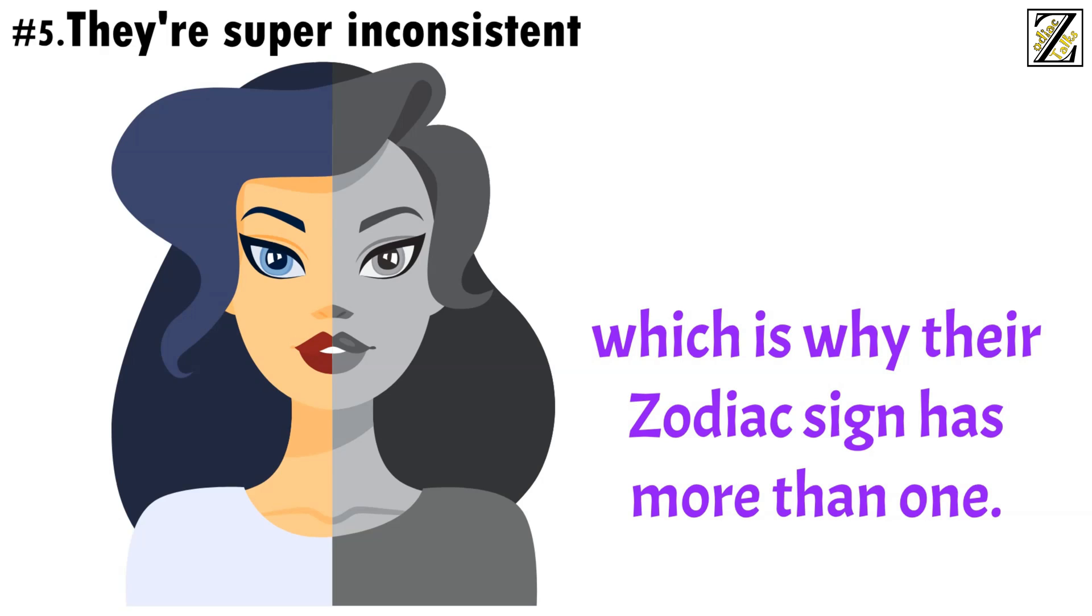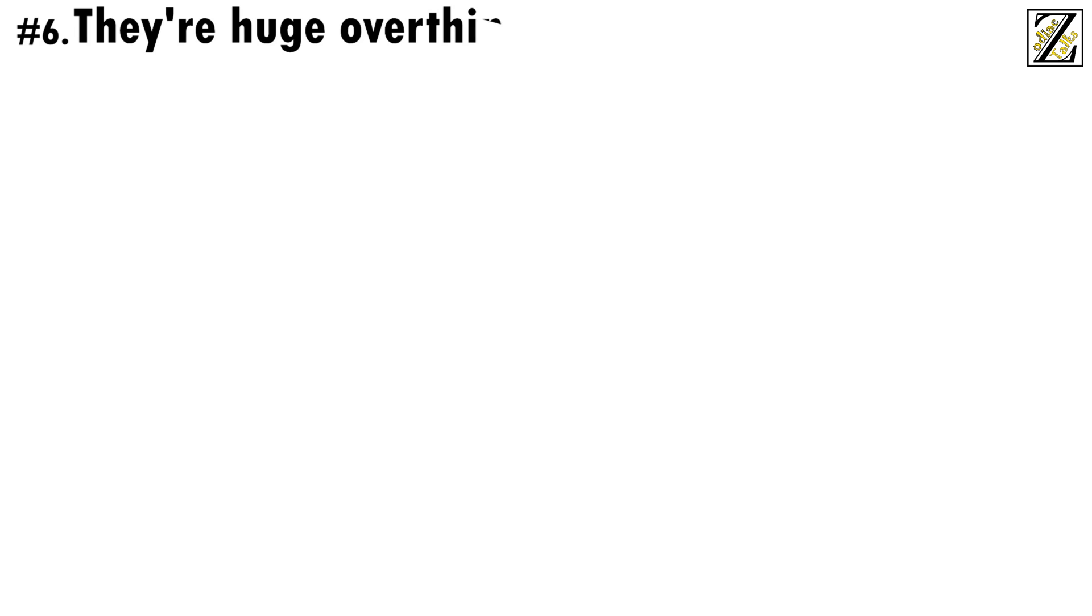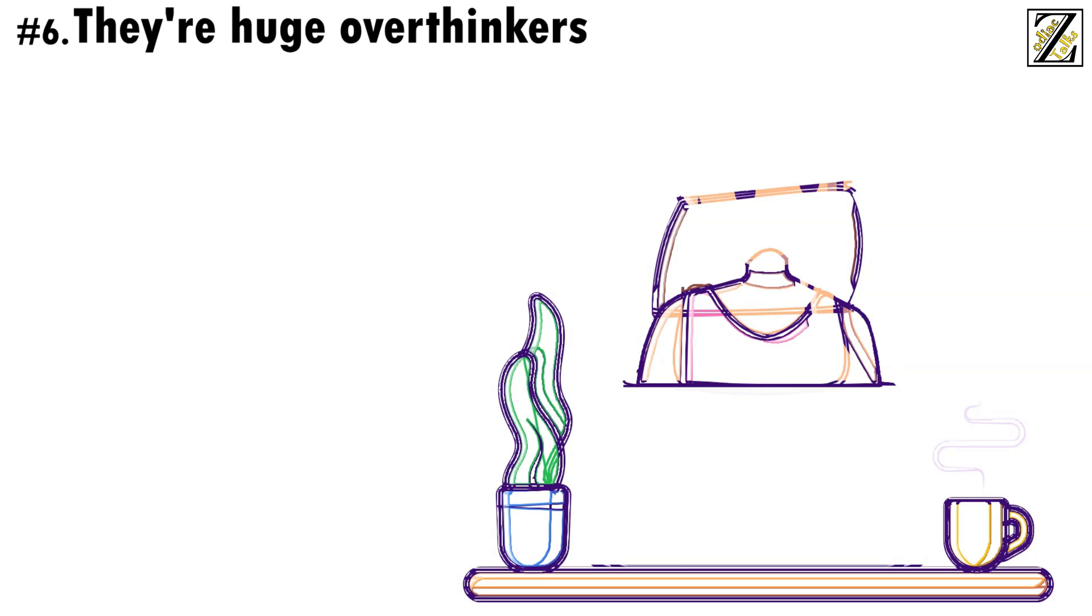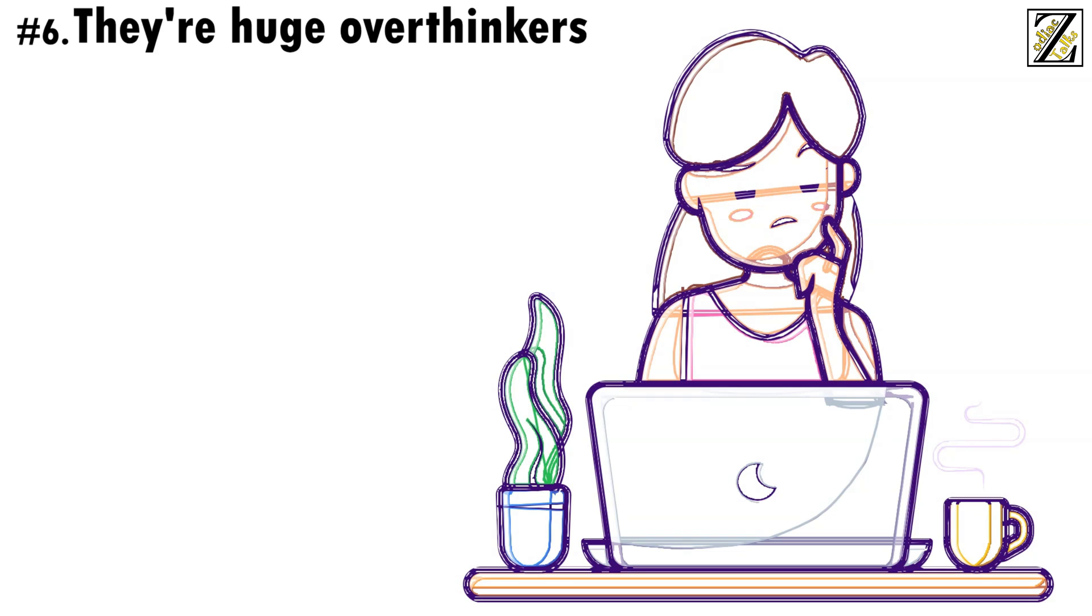Number 6, They're huge over thinkers. Part of the reason why Gemini is always changing their mind is that they always overthink everything, second guessing their every choice and flip-flopping between alternatives until someone else makes a choice for them, or they run out of time.